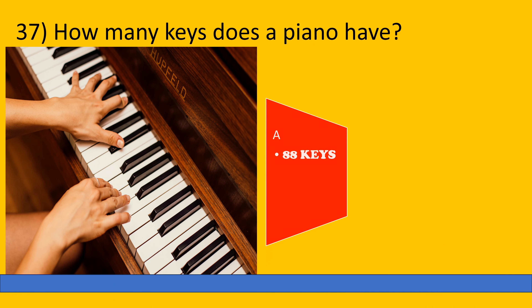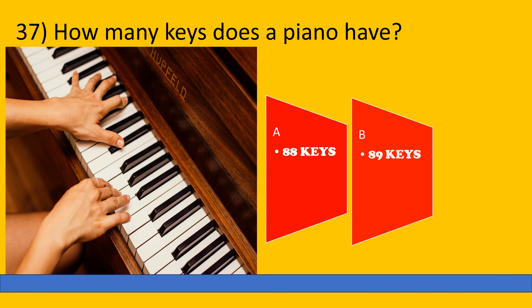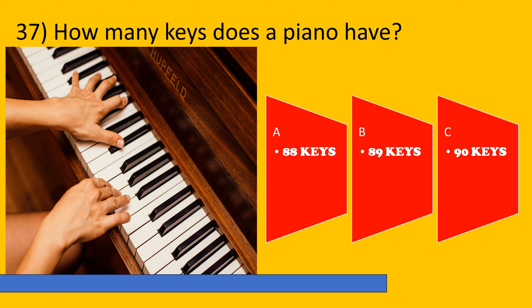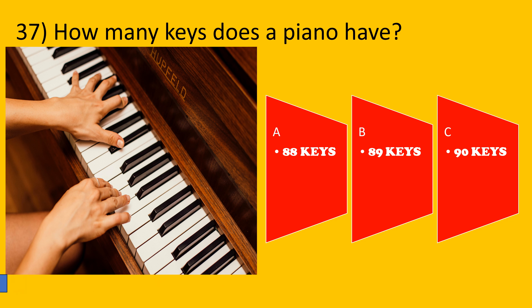How many keys does a piano have? A: 88 keys, B: 89 keys, C: 90 keys. The correct option is A, 88 keys.